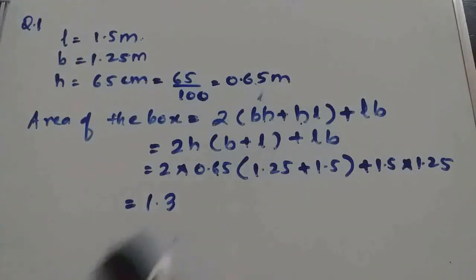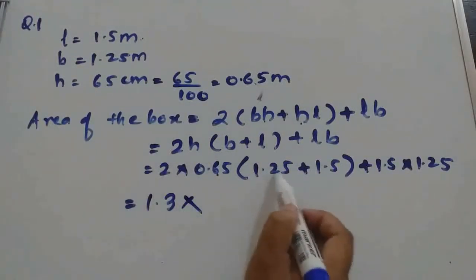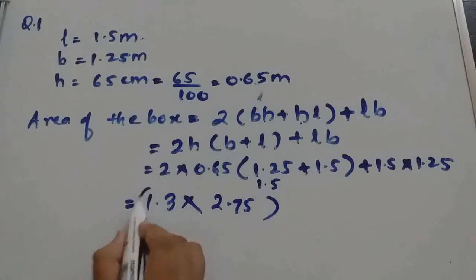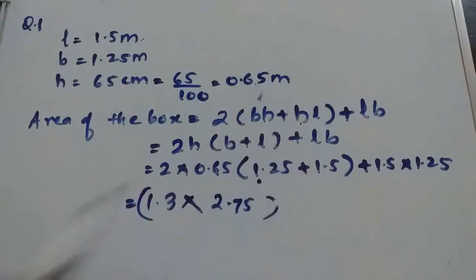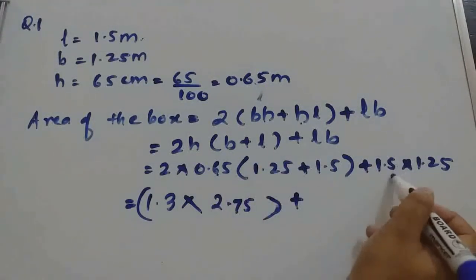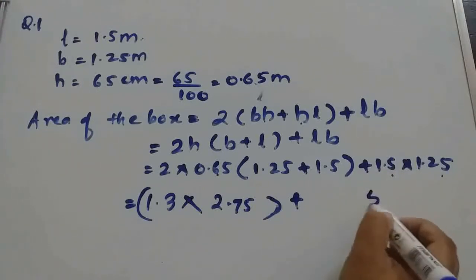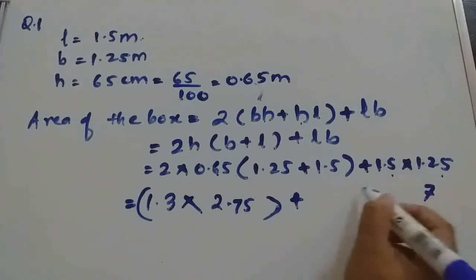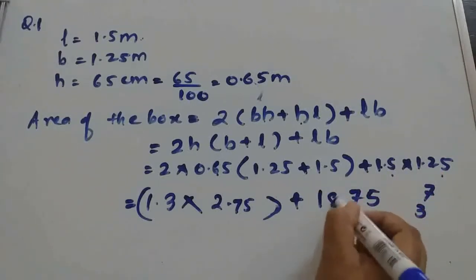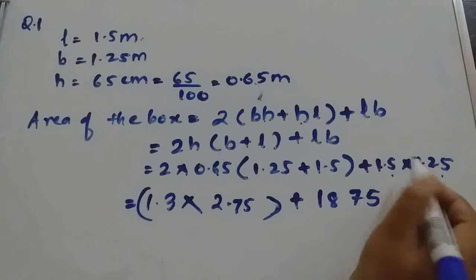These two numbers you can add here. 1.25 and 1.5 will give 2.75. These will be in multiplication and here you can multiply 15 and 125, so avoid decimal first. Now after how many digits is decimal? 3 digits.